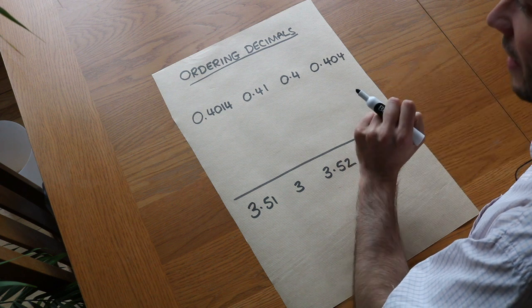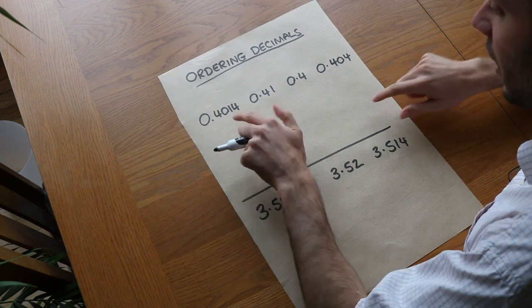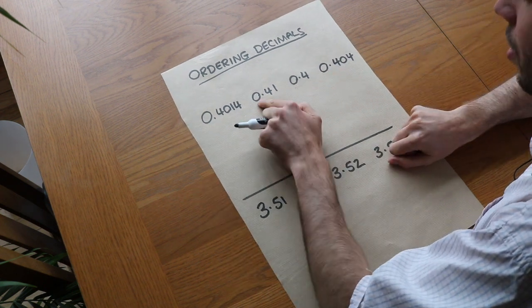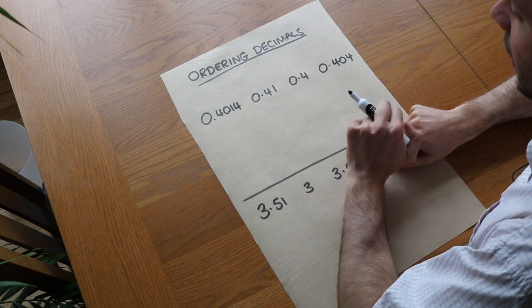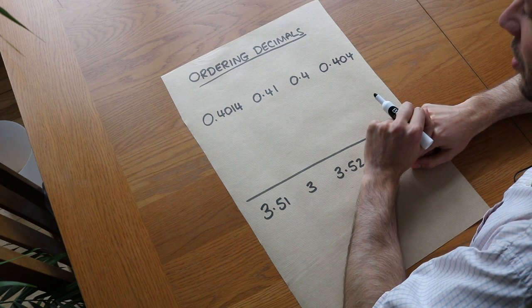Now the key to this is comparing digits which have the same place value. So we first look at the units digit and you can see that the units digit of every single one of these numbers is zero. So it's kind of a draw, we can't tell which one is bigger by looking at the units digit alone.